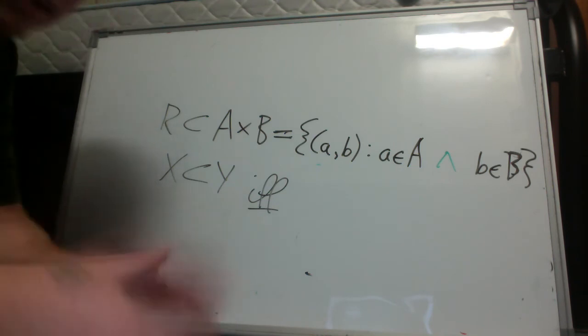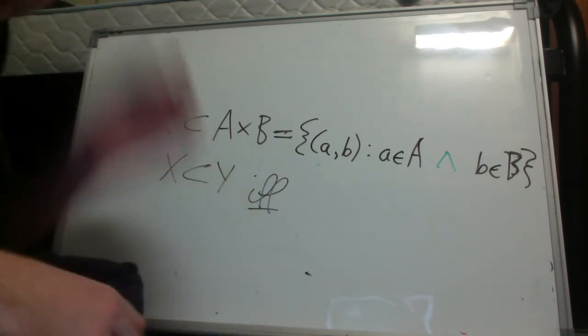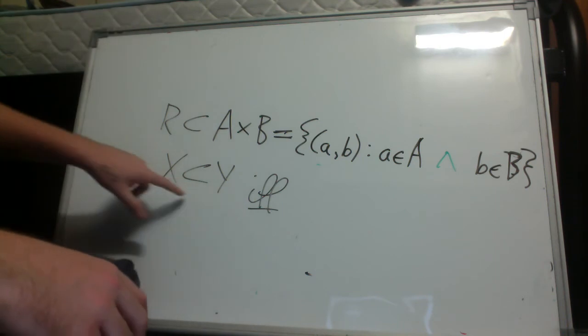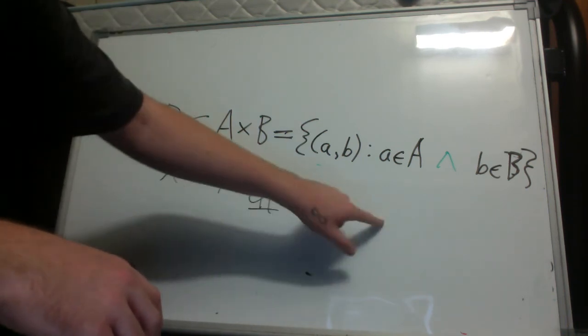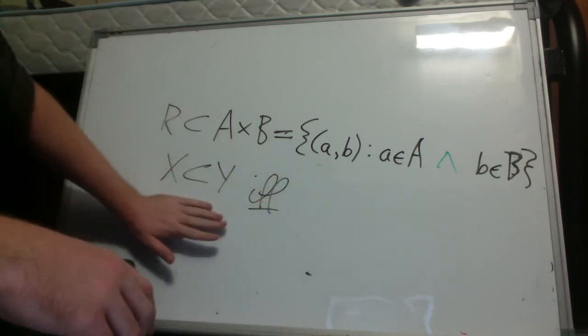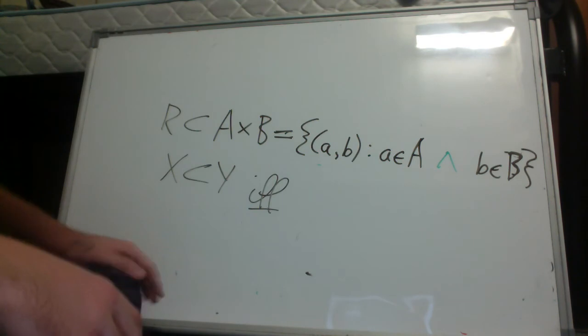So if and only if is a bi-conditional connective. So it says that this implies this, so the left-hand side implies the right-hand side, and the right-hand side implies the left-hand side.